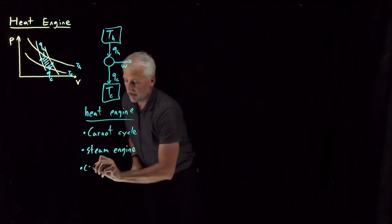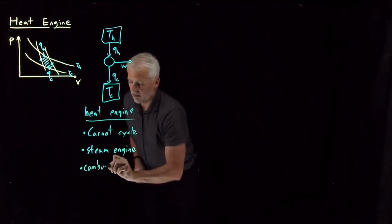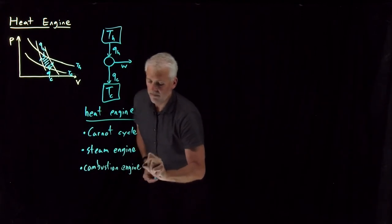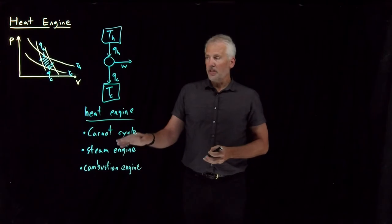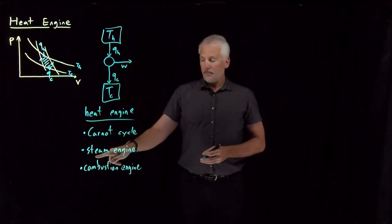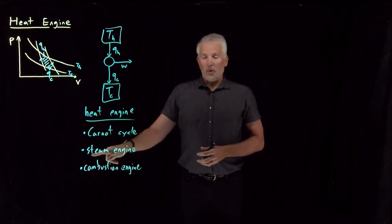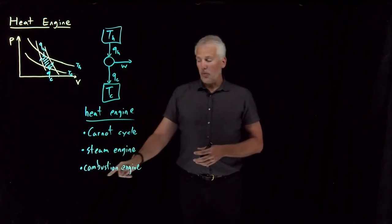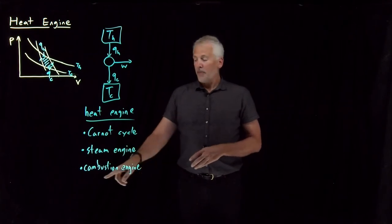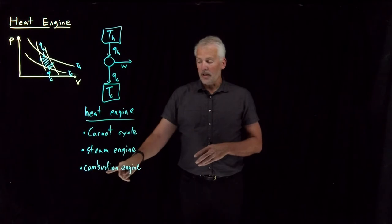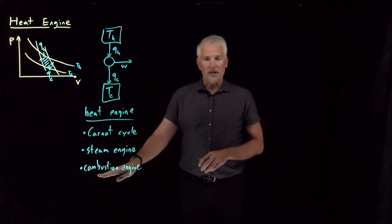A more modern process is a combustion engine. In each of these two processes, the goal is still to convert heat into useful work. Either heat, when we burn coal and boil water and generate steam, we use that steam to do the work, or we burn gasoline and cause the pistons in an engine to go up and down. And that is what we use to do the useful work in a car engine, for example.